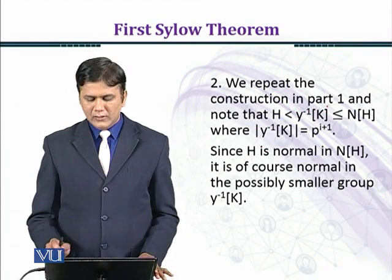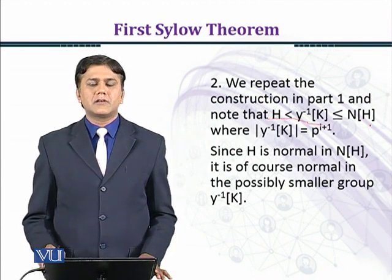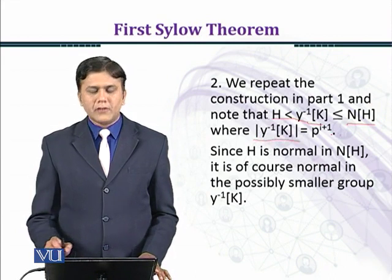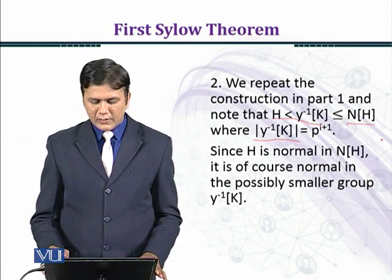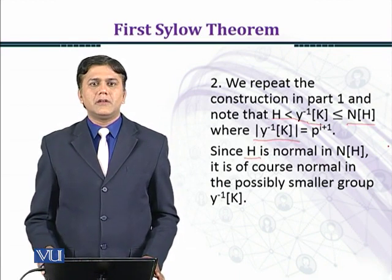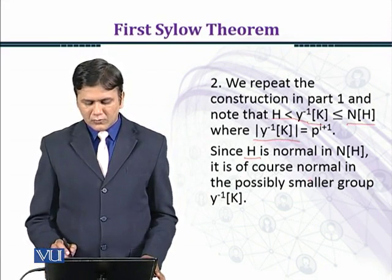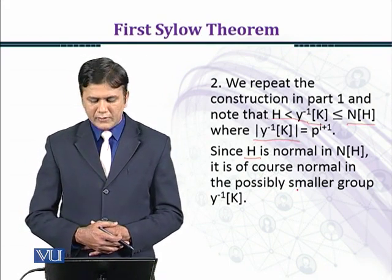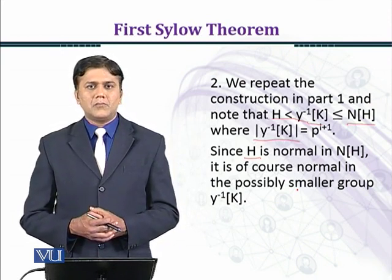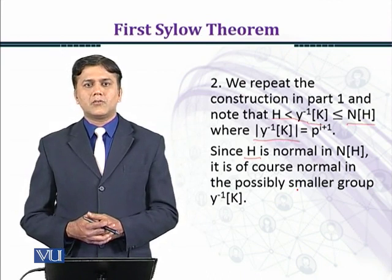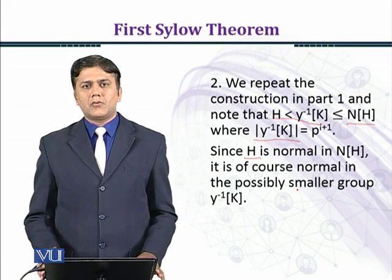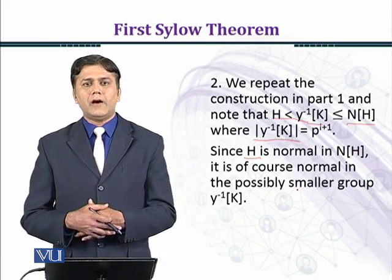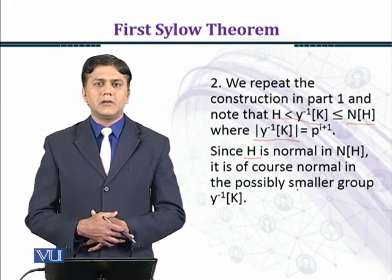Note that H is a subgroup of φ⁻¹(K), which is a subgroup of N(H), and the order of φ⁻¹(K) equals P raised to power I plus one. Since H is normal in the normalizer of H, it is of course normal in the possibly smaller group φ⁻¹(K), and we are done with the First Sylow Theorem.